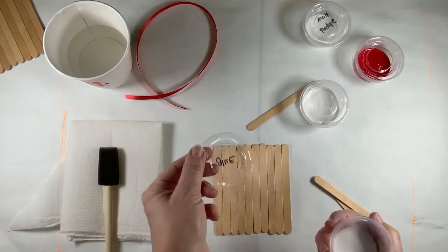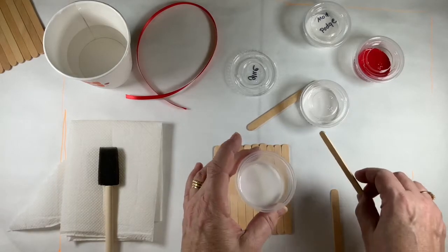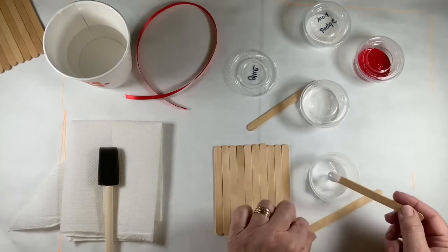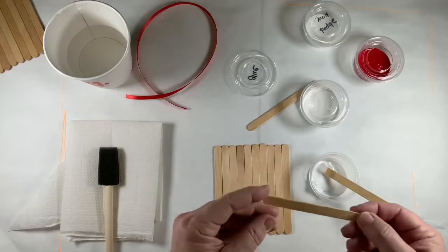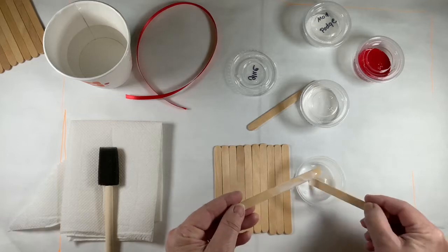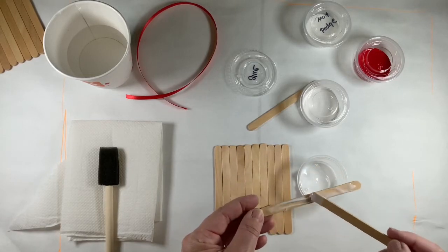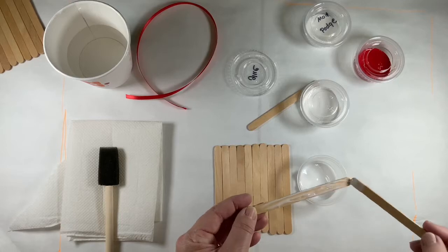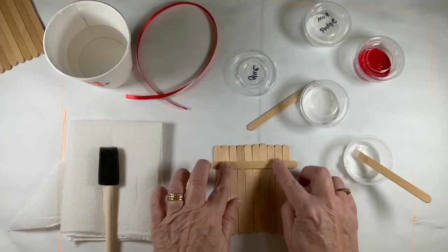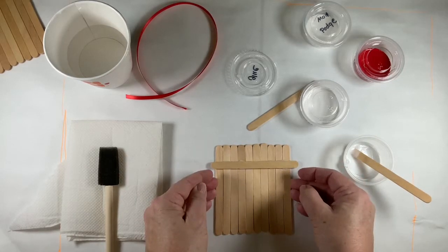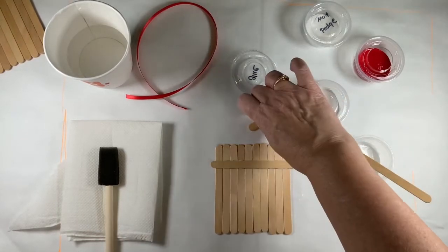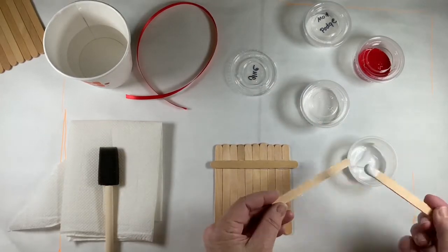And then we have two sticks left that are going to go across. So we're going to open up the glue and we're going to spread some glue on those on the back side of the stick that's going to go across. I think that's enough. And then we're going to press it down there, push them in a little bit so that they don't separate.